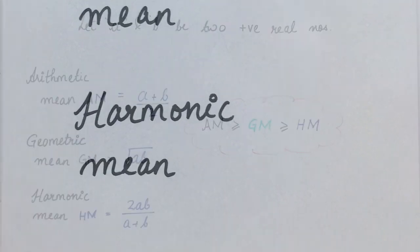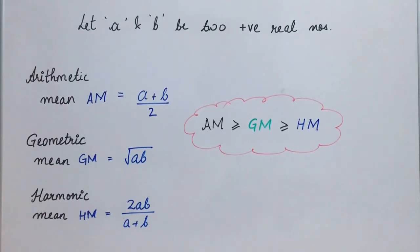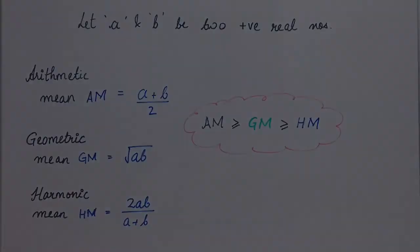So this is all we have for arithmetic mean, geometric mean, harmonic mean and harmonic progression. In the next class we shall study some special kind of sequences.